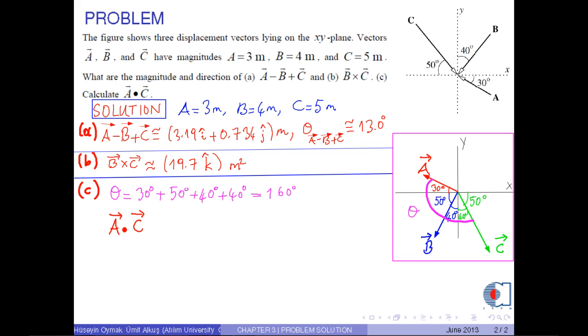Therefore, A dot C is A times C times cosine 160 degrees. If you put the corresponding numerical values into this equation: 3 times 5 times cosine 160 degrees, then the result is approximately negative 14.1 meters squared.